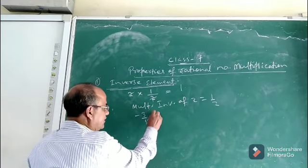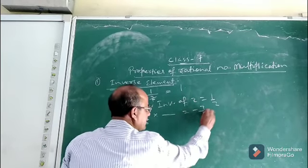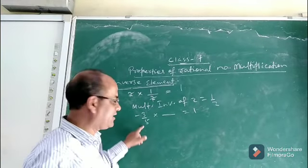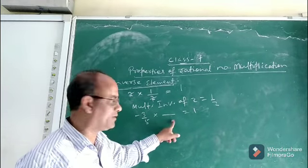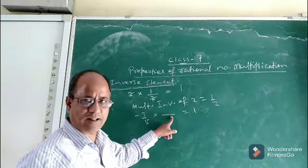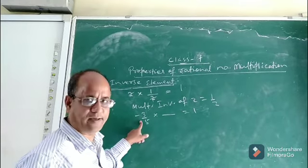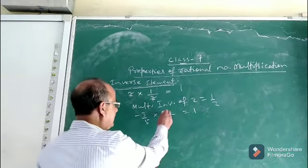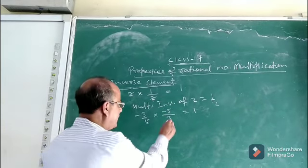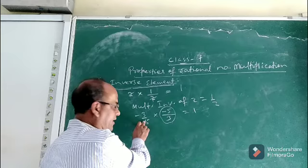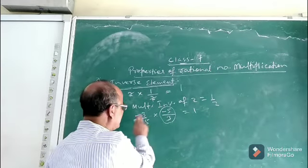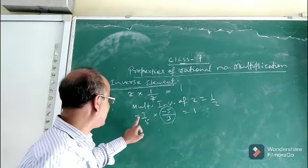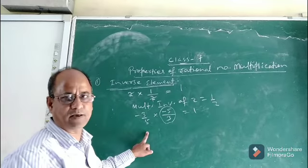Similarly, suppose minus 3/5 into dash equals 1. So minus 3/5 multiplied by which rational number will give you 1? The answer is clearly minus 5/3. If you multiply minus 5/3 by minus 3/5, then 3 and 3 cancel, minus times minus is plus, 5 and 5 cancel — it is 1. So here, minus 5/3 is the multiplicative inverse of minus 3/5.